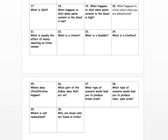What is a ureter? It's a tube that connects a kidney to a bladder. What is a bladder? It's a muscular bag that stores urine prior to being removed from the body. What is the urethra? The tube connecting the bladder to the outside of the body. Question twenty-five: where does ultrafiltration happen? Glomerulus and Bowman's capsule.